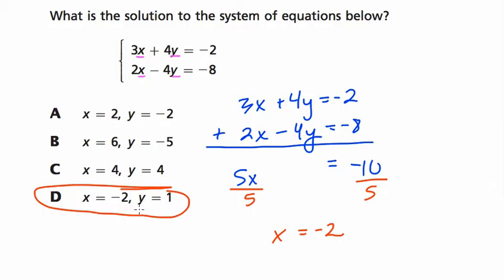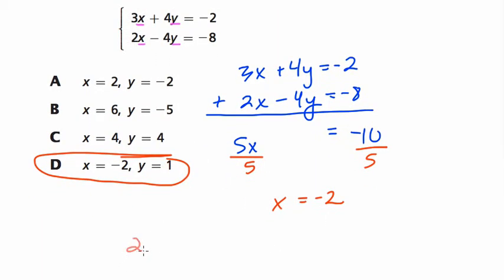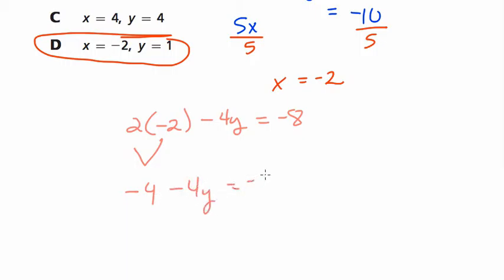But just to confirm that y is 1, if we plug in negative 2 to either equation, I'll plug into the second. It looks less scary. 2 times x, 2 times negative 2, minus 4 times y equals negative 8. So 2 times negative 2 is negative 4, minus 4y is negative 8.